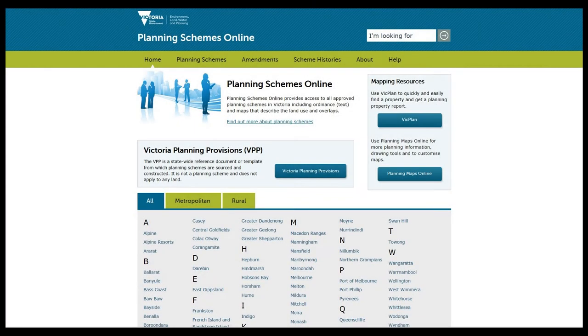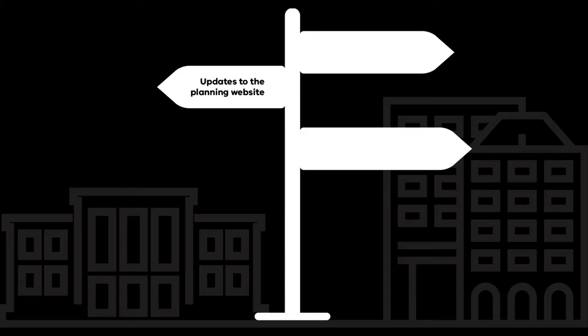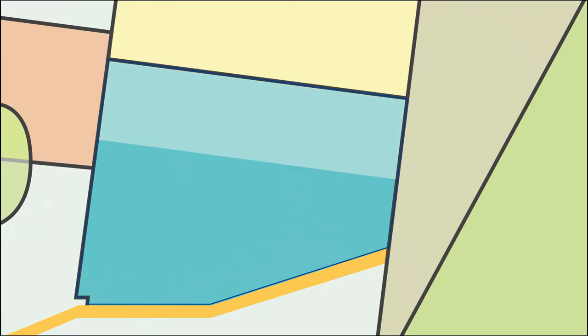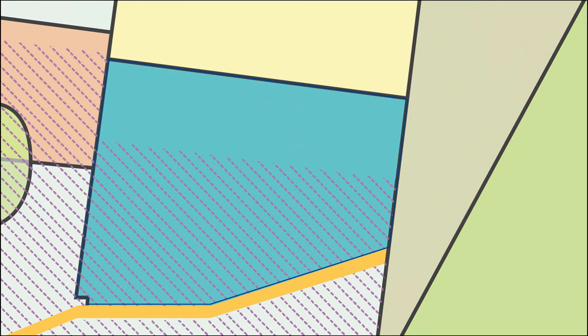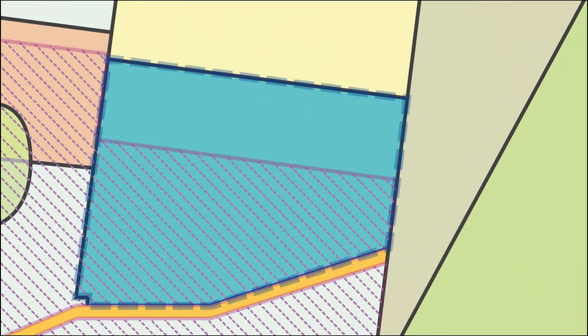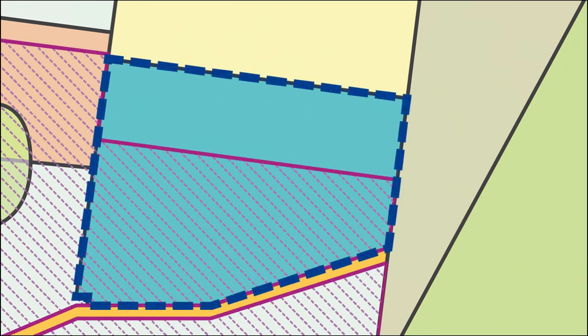VicPlan is available on the Planning Scheme's online website. It is the first in a number of web improvements. Zones and overlays are now realigned weekly, resulting in more accurate data.